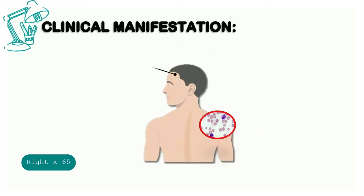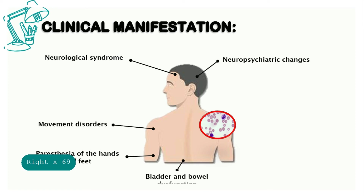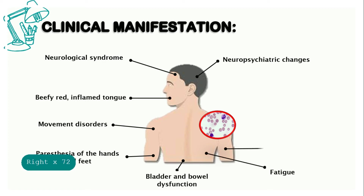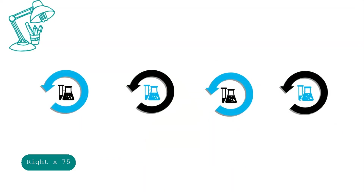The clinical manifestations are neurologic syndrome, paresthesia of the hands and feet, movement disorders, neuropsychiatric changes, bladder and bowel dysfunction, beefy red inflamed tongue, fatigue, jaundice, anisocytosis, poikilocytosis, hypersegmented neutrophils, and low vitamin B12 serum level.